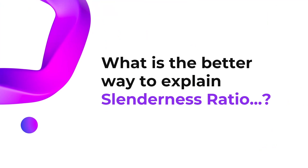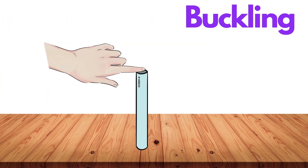What would be a better way to explain slenderness ratio? Definitely with an example. Imagine you have a long thin straw — place it vertically on the table and try to hold it by placing your finger on the top, as shown in this figure. The straw will stand upright; it is expected to stand. Now try to put slight pressure on the straw by pressing your finger on the top — obviously it still stands. Now keep on increasing the pressure, and at some point, the straw will suddenly bend or wobble in the middle.